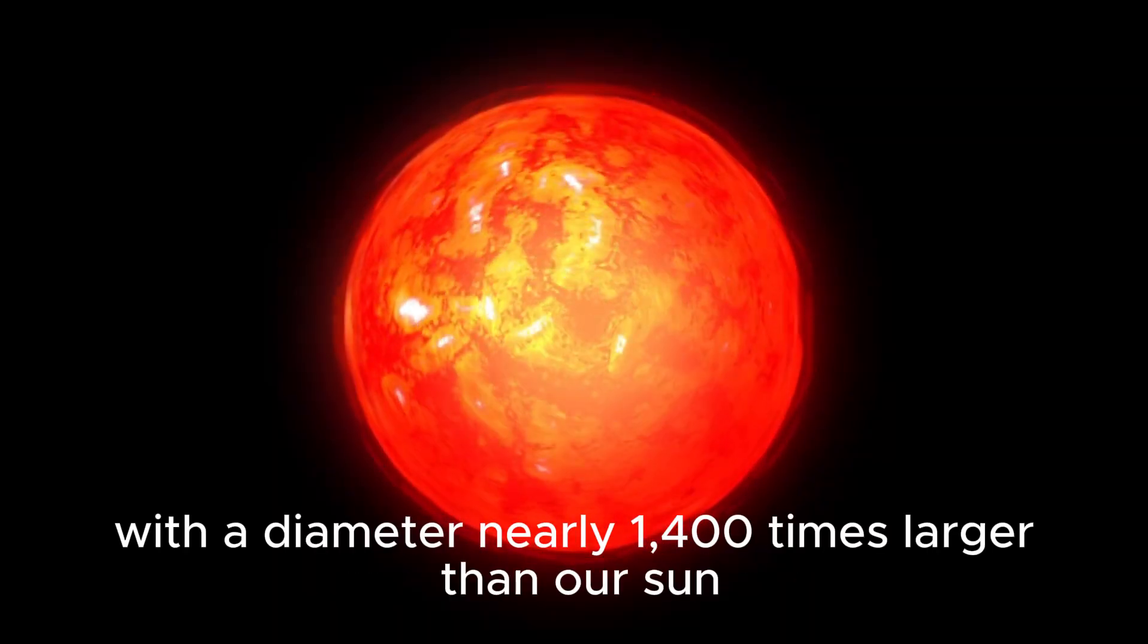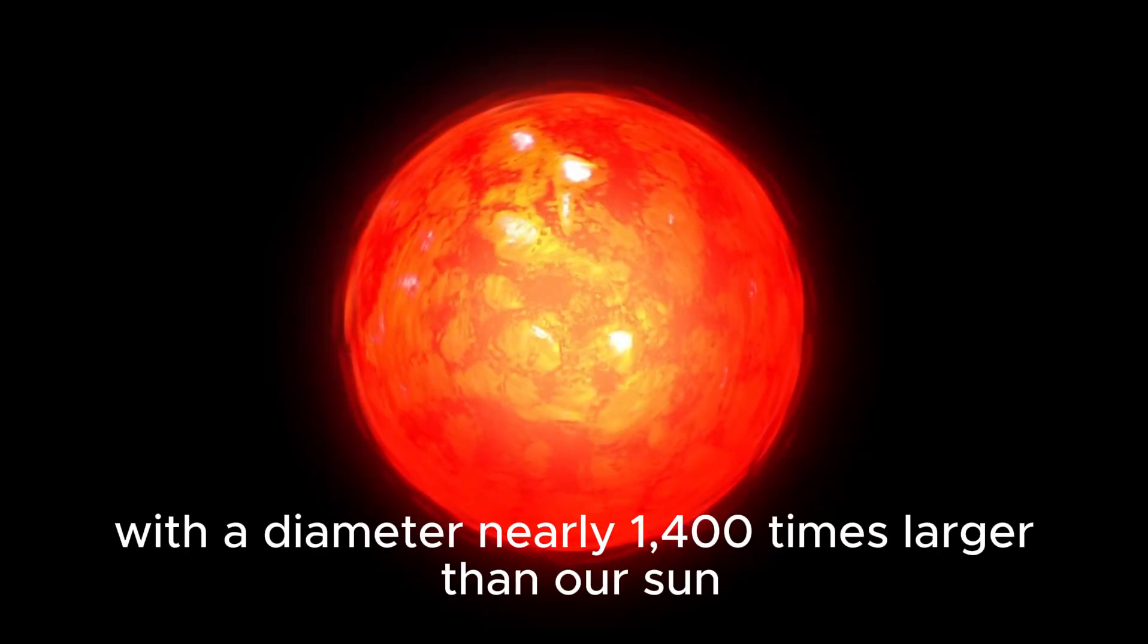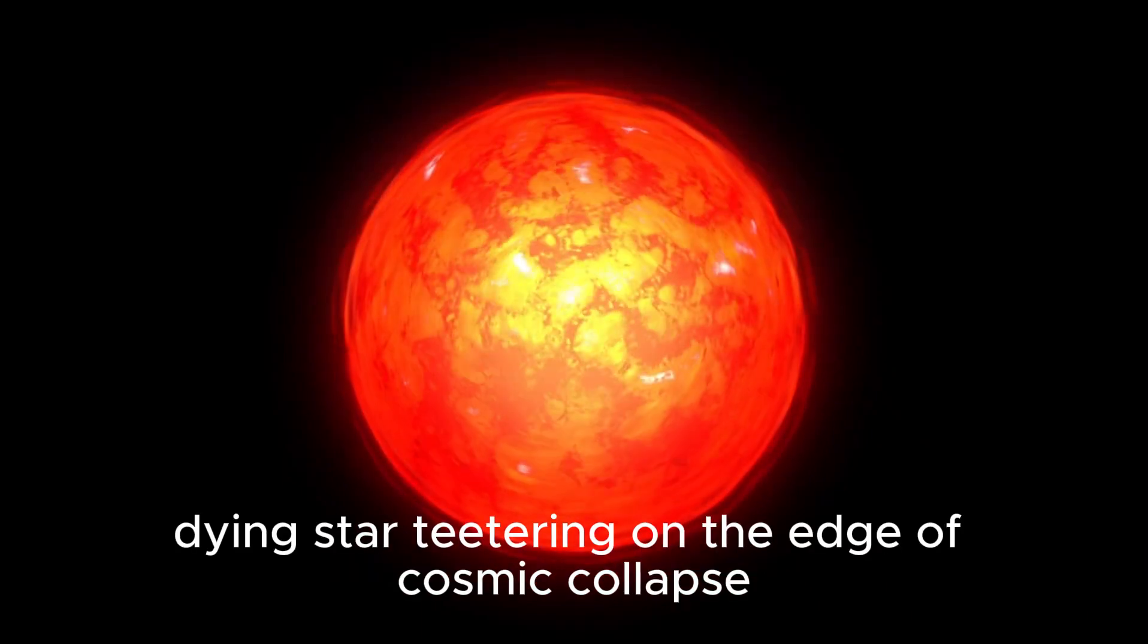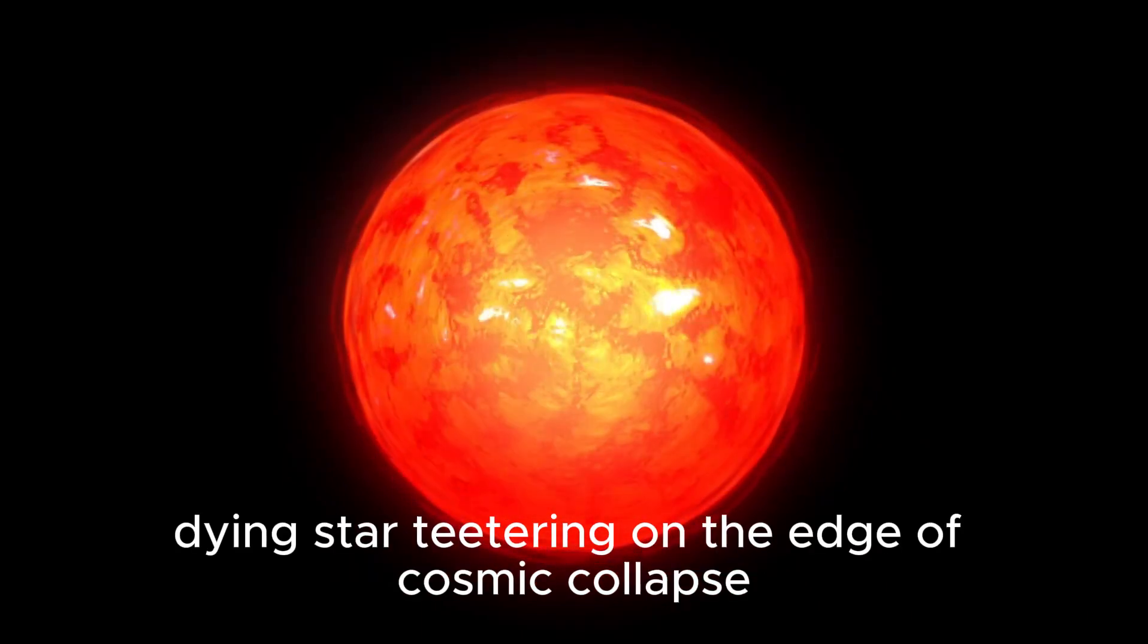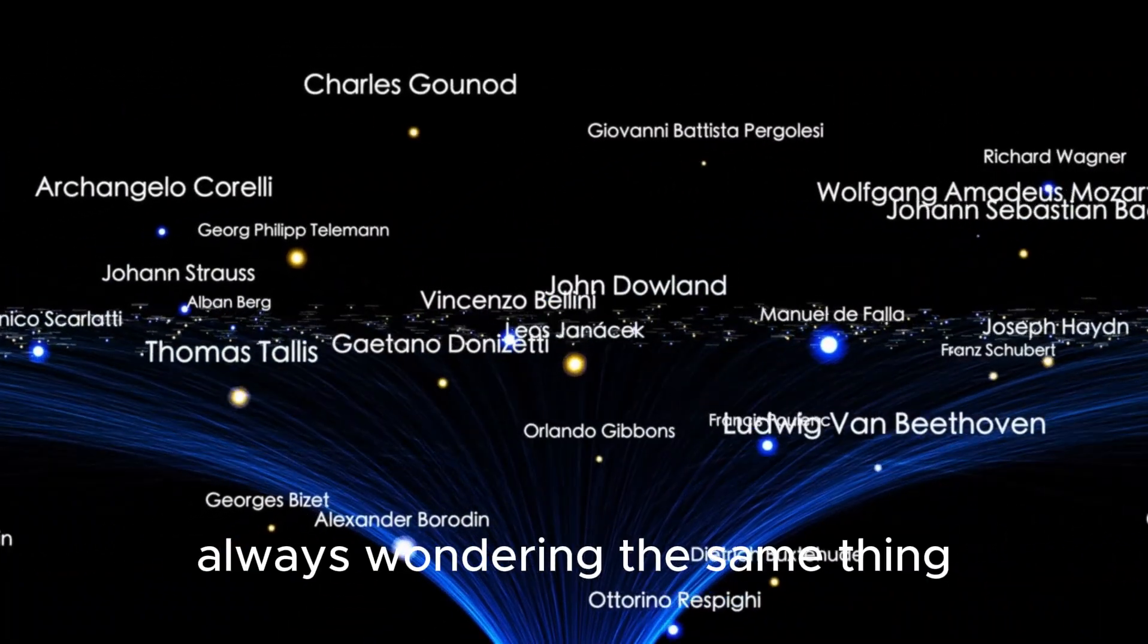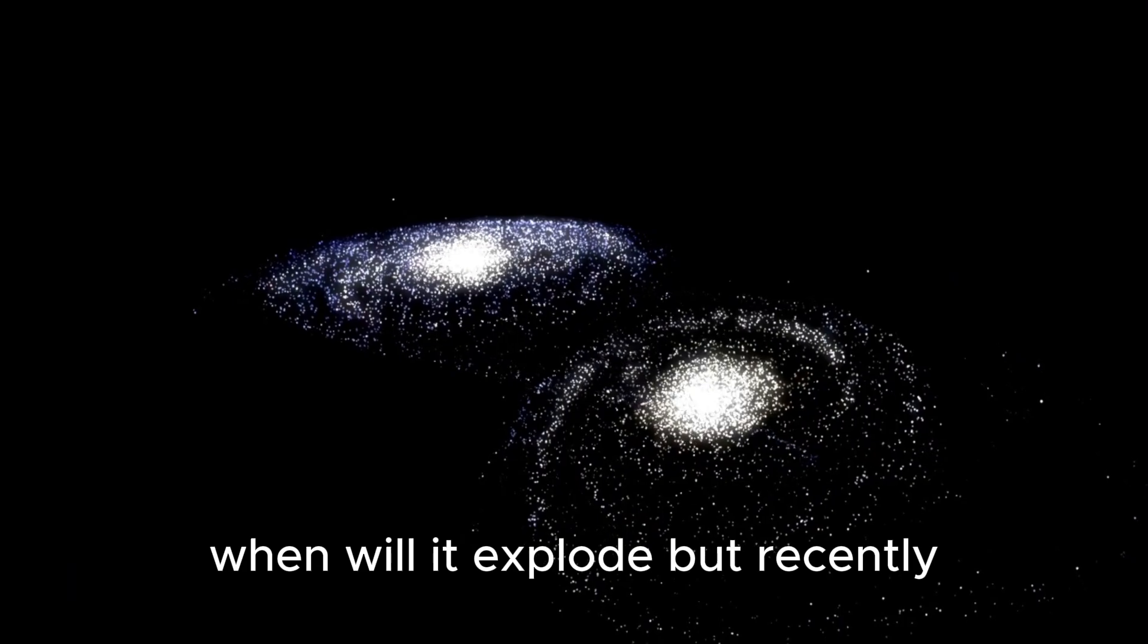With a diameter nearly 1,400 times larger than our sun, Betelgeuse is a red supergiant, an enormous dying star teetering on the edge of cosmic collapse. Astronomers have studied it for generations, always wondering the same thing. When will it explode?